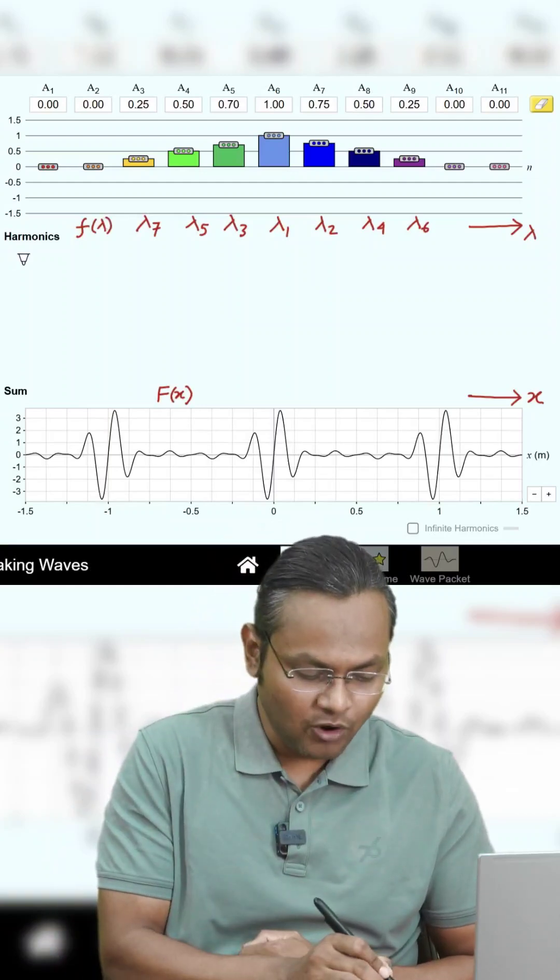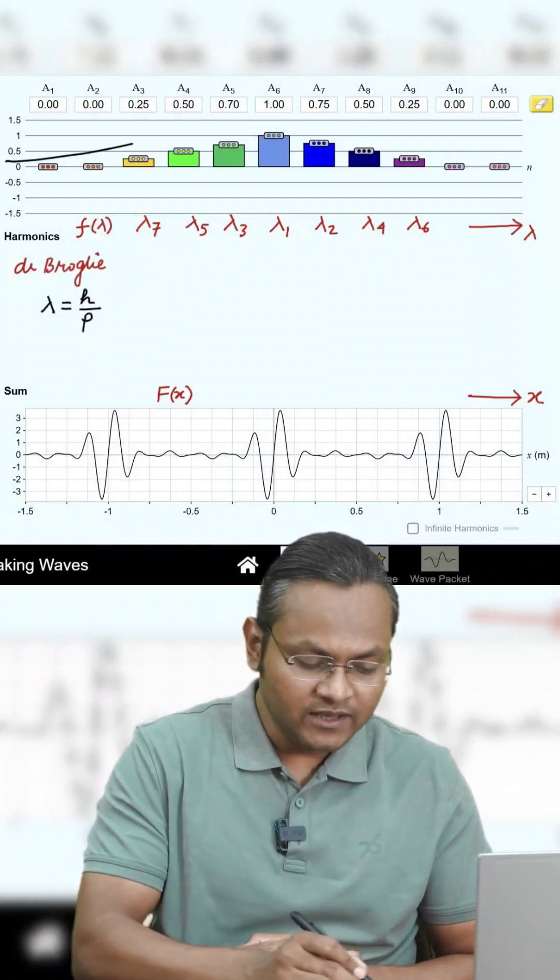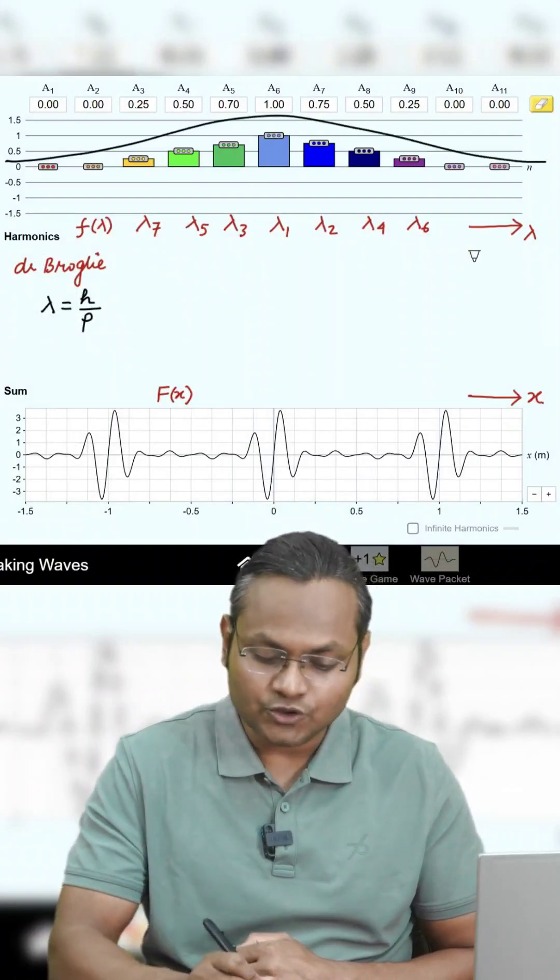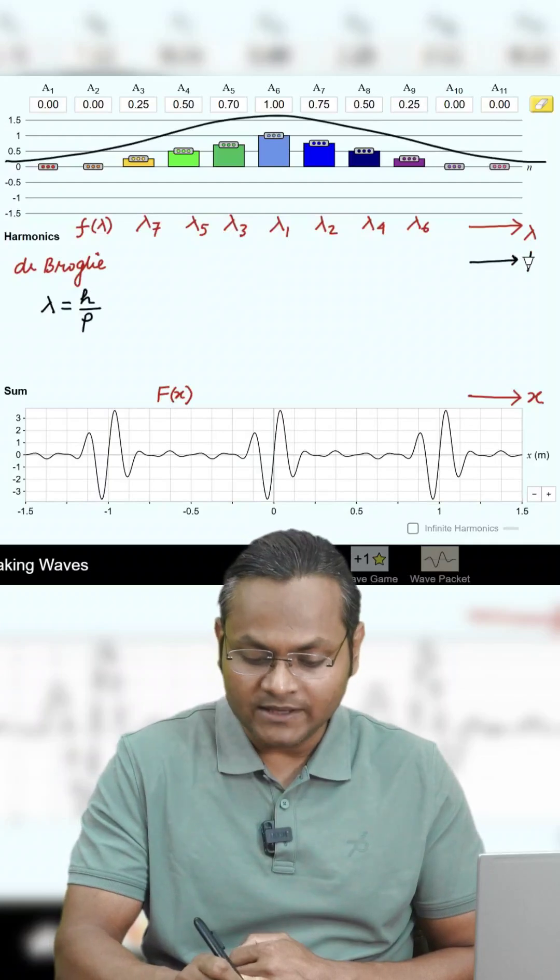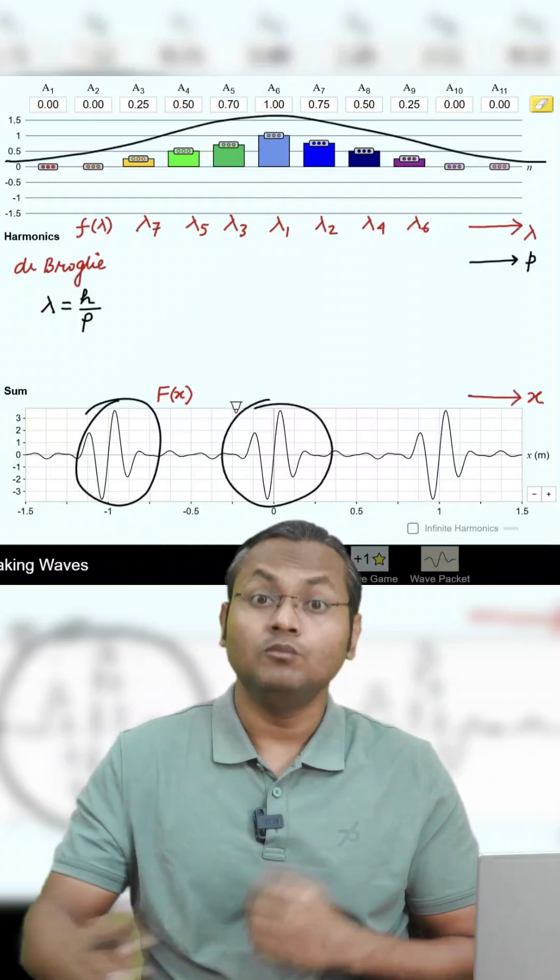आप लोग को पता है that lambda has something to do with momentum. This is the de Broglie hypothesis. So इसका मतलब यह जो distribution आपको दिख रहा है, this distribution is also with respect to momentum of the particle. Now here we can see some repetition of wave packet जो मुझे नहीं चाहिए.